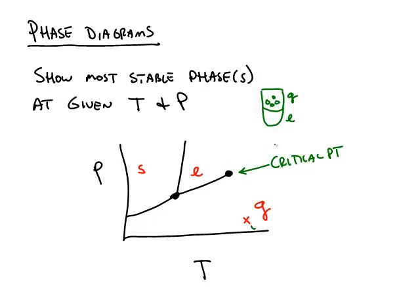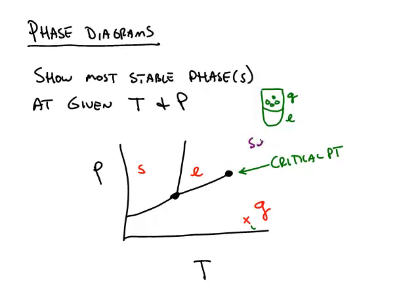When you're past the critical point, you reach what's called the supercritical fluid. And supercritical fluids, the density of the liquid phase, the density of the gas phase is identical, and it's not possible to have a distinction between those two phases.